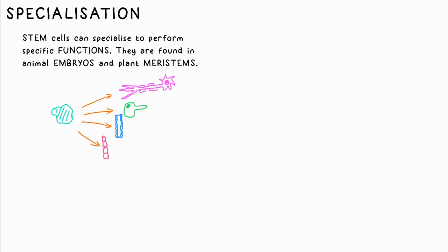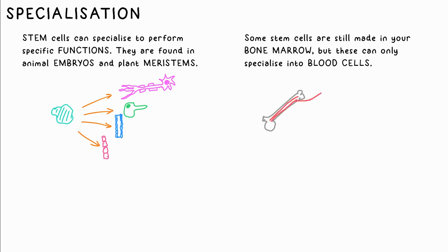Cells specialize depending on the function they need to fulfill — for example nerve, muscle, root hair, xylem, and phloem cells. Stem cells are those that haven't yet specialized. They're found in human and animal embryos and the meristem of plants — that's the top of the shoot. Stem cells are also made in your bone marrow throughout your life, but these ones can only specialize into blood cells.